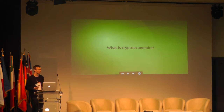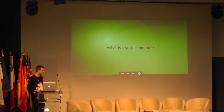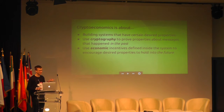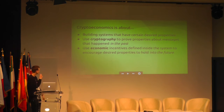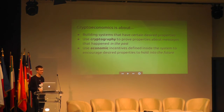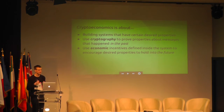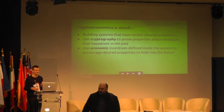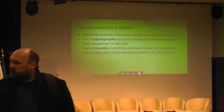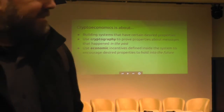So if we want to design a proof of stake algorithm, or an algorithm for sharding, or even something higher level like a decentralized oracle, what methodology would you use to figure out whether or not it's safe? In general, the way that I and many others in the Ethereum research community think about the general notion of crypto economics is that it's about using a collection of cryptographic and economic building blocks to build systems that have certain desirable information security properties. You can use cryptography to prove properties about messages that happened in the past, and you can use economic incentives defined inside a system to encourage certain desired properties of that system to hold into the future. So cryptography is kind of backward-looking and economics is forward-looking.